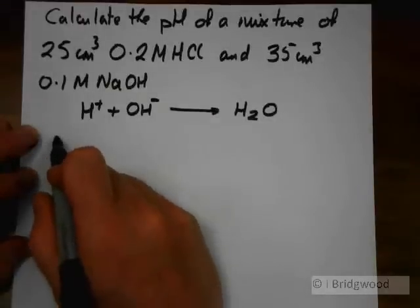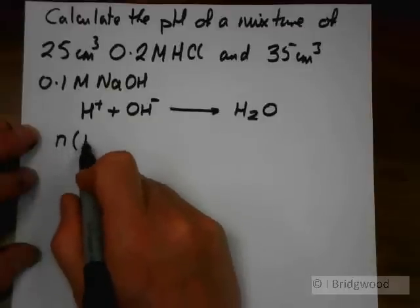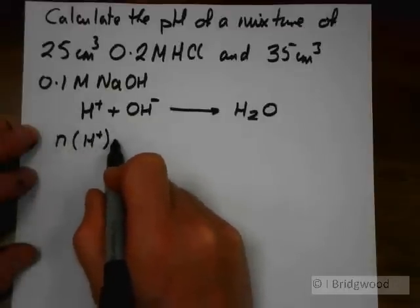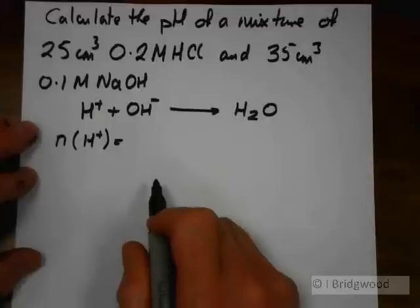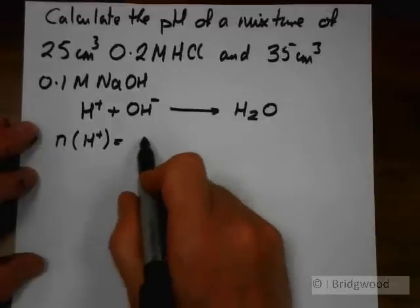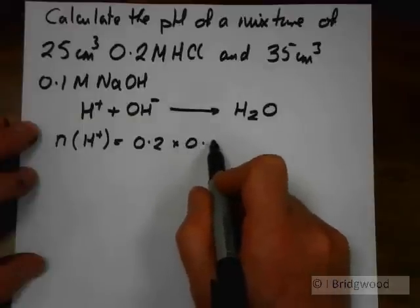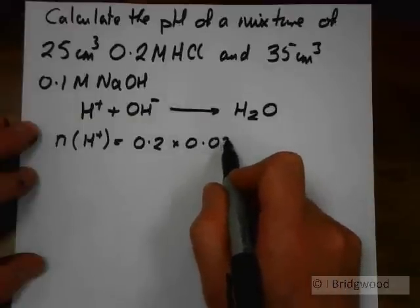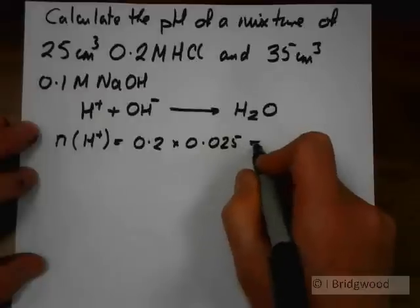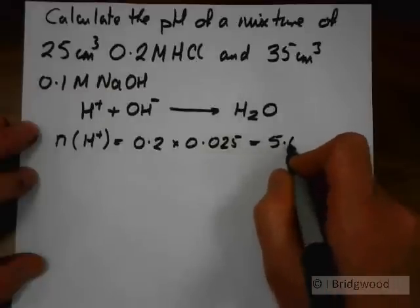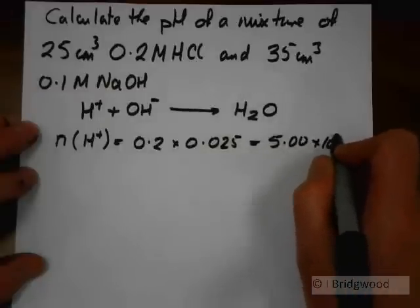So to start off with we can work out the number of moles of hydrogen ions, concentration times volume. Of course that's going to be 0.2 times 25 over 1000, 0.025, which gives 5.00 times 10 to the minus 3.